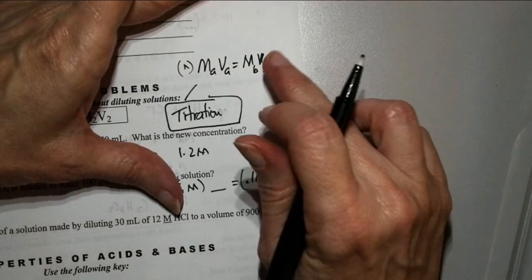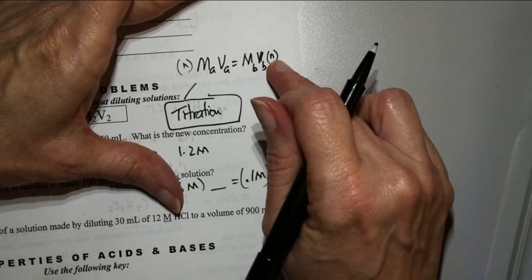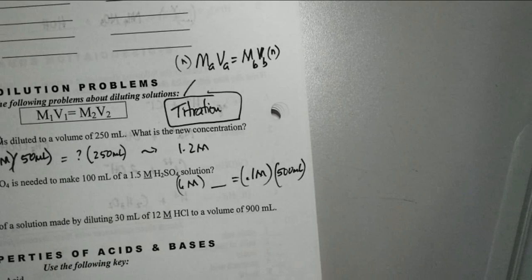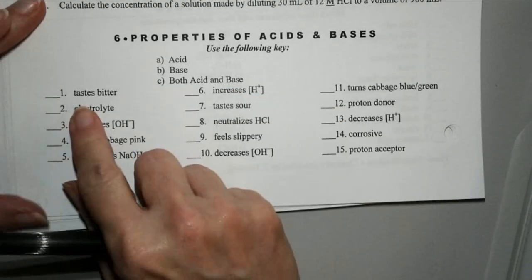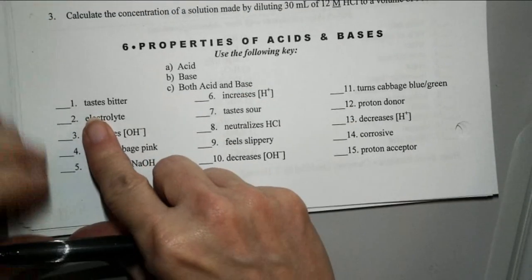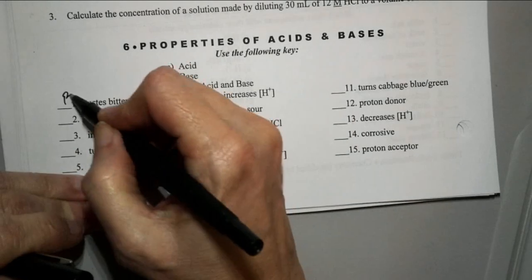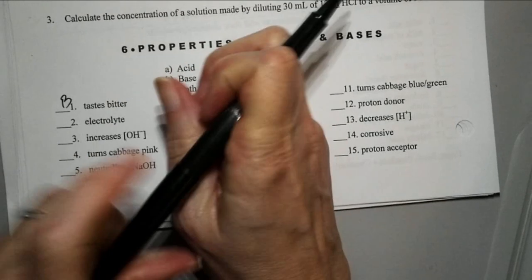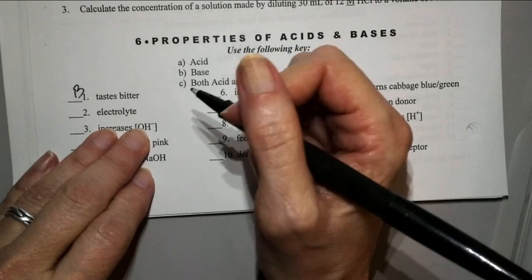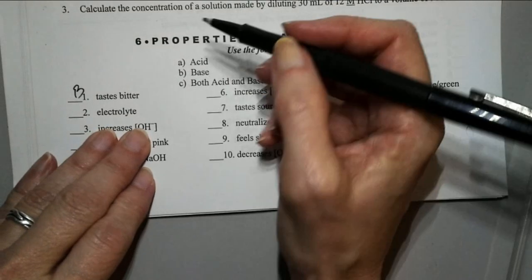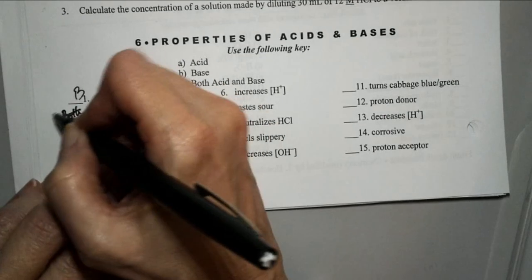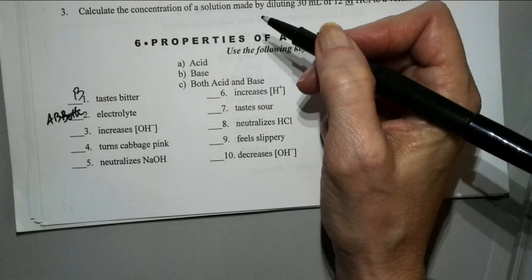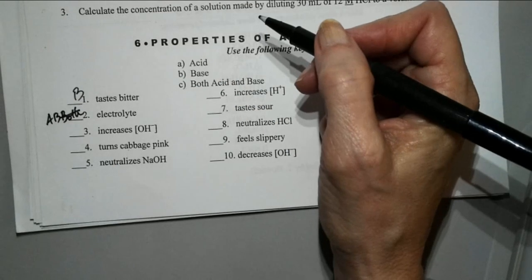Down here at the bottom — acid, base, or both? Which one tastes bitter? Bases taste bitter. Which ones can conduct electricity? Both — some better than others. If it's a weak acid or weak base, it's a weak conductor of electricity. If it's a strong acid or strong base, it's a strong conductor. That's where those words 'strong' and 'weak' come from — it's how good they are at conducting electricity.